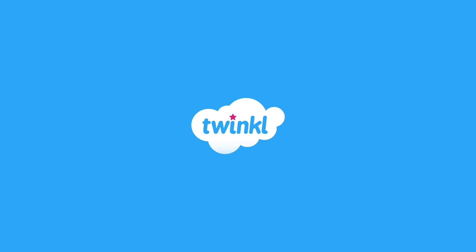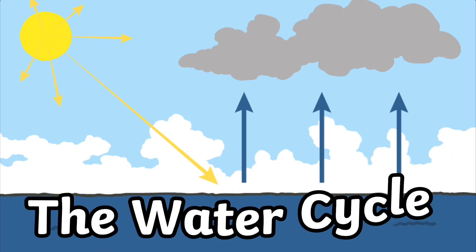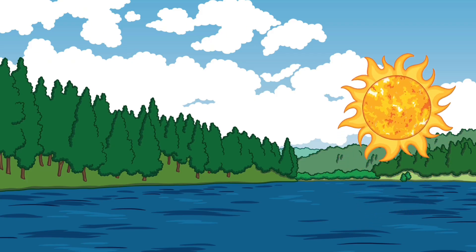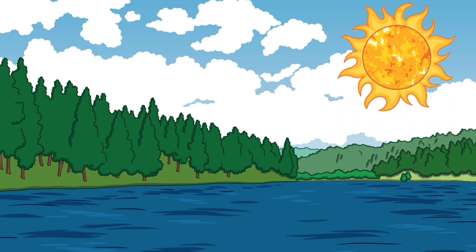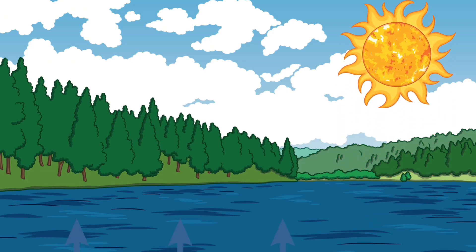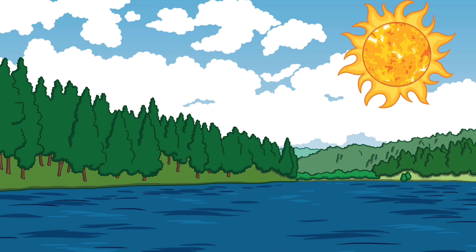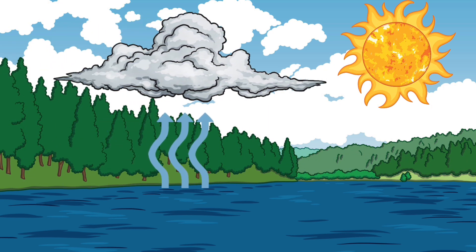Hey young adventurers, let's go on a journey to explore the water cycle and how it works. The Sun heats up the earth and makes the water in oceans, lakes, and rivers turn into water vapor — like a big invisible mist. This process is called evaporation. The water vapor rises into the air and cools down.